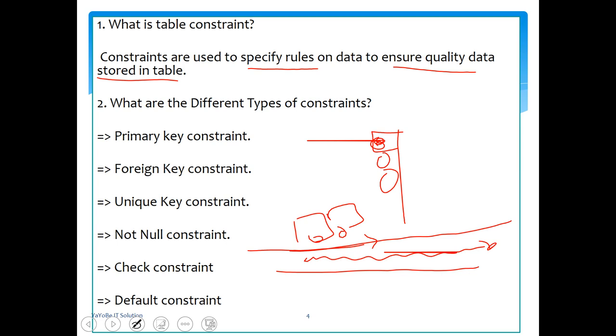Constraints are nothing but a set of rules to check whether your data is stored in a table in a quality way or not. That is what we have to check. Constraints define standards - these are set of rules to ensure quality of data stored in a table.